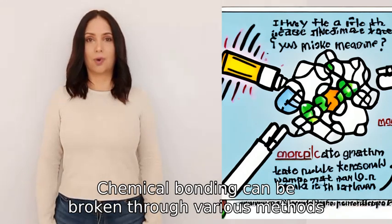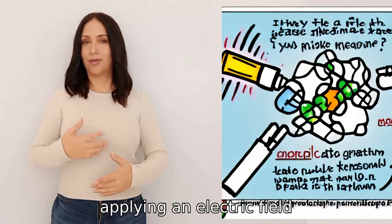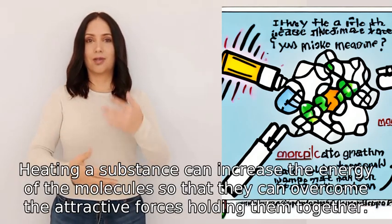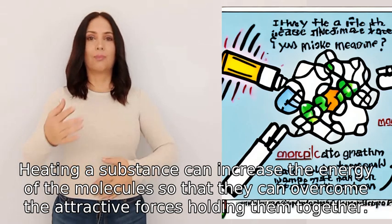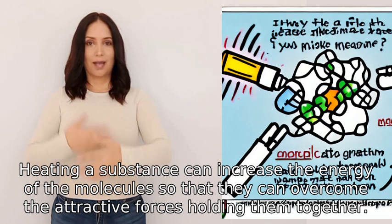Chemical bonding can be broken through various methods including heating, applying an electric field, or using a chemical catalyst. Heating a substance can increase the energy of the molecules so that they can overcome the attractive forces holding them together.